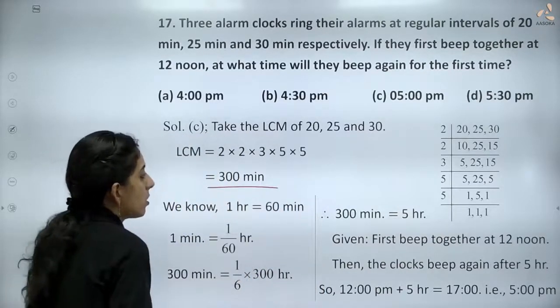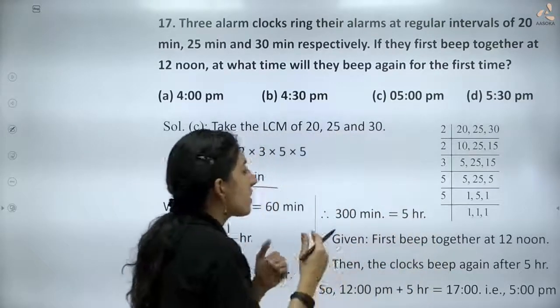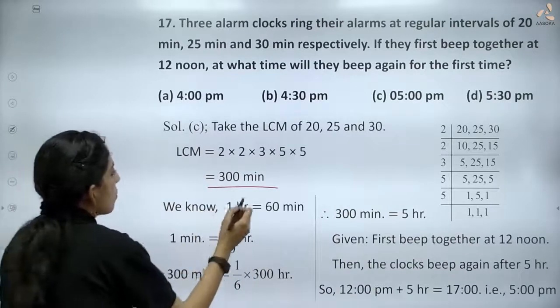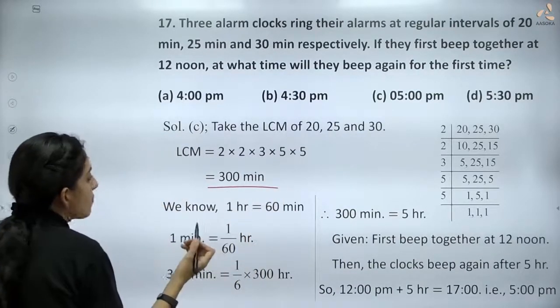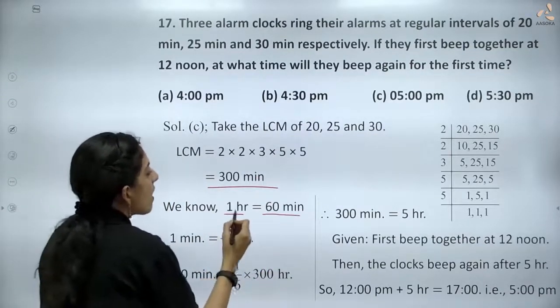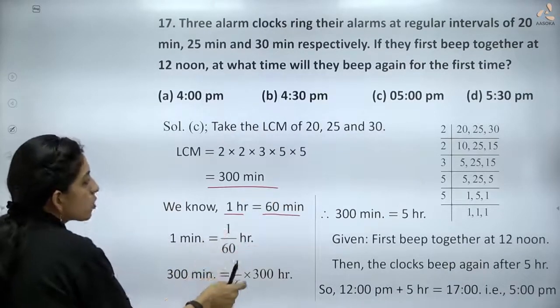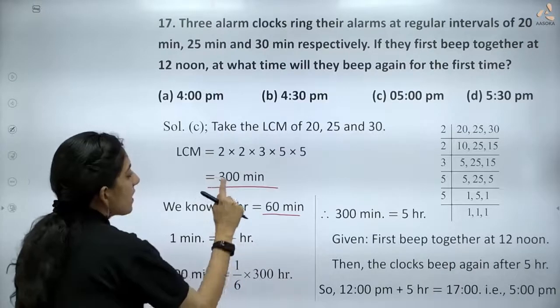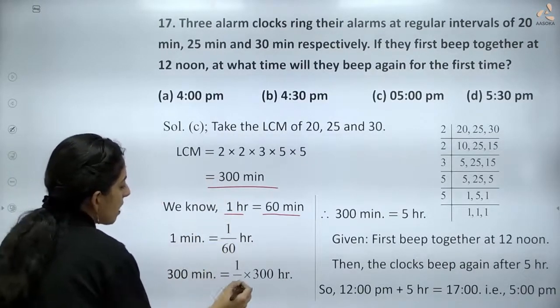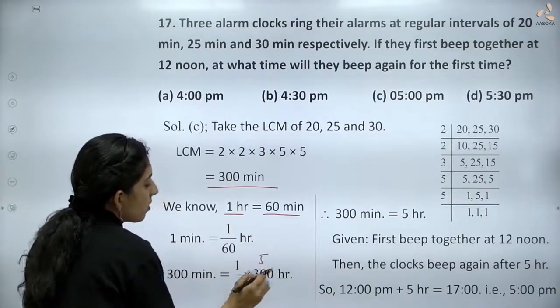At the interval of 300 minutes, they will beep again. Let us convert this to hours. We know 1 hour equals 60 minutes, so 1 minute equals 1/60 hour. Therefore, 300 minutes will be 300 × 1/60 = 5 hours.